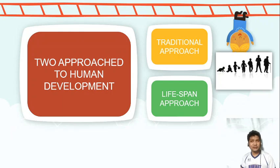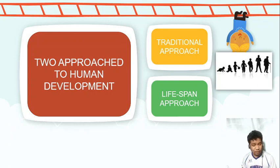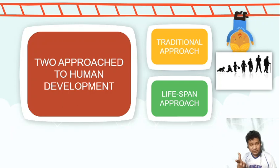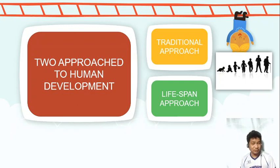The lifespan approach holds that a person, no matter what their age, as long as they are still alive, is capable of development. Another way to differentiate the two viewpoints is the starting point of when a person develops. The traditional approach states that development only takes place once you are born. But the lifespan approach says development actually takes place the moment of conception — when the egg cell and the sperm cell unite and there is fertilization.